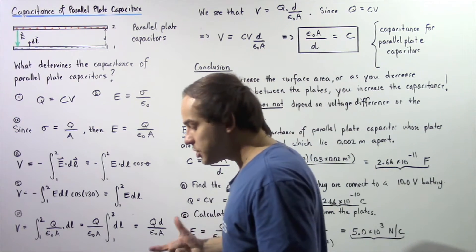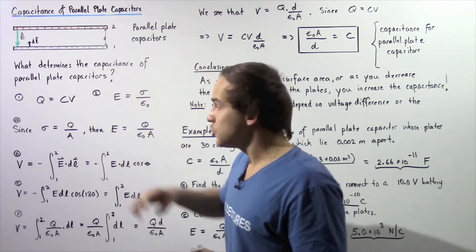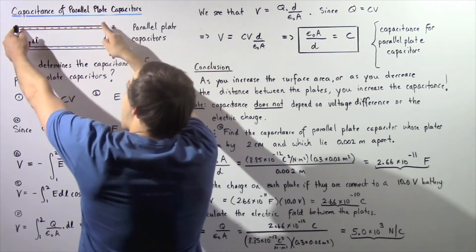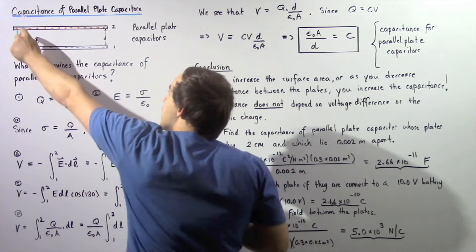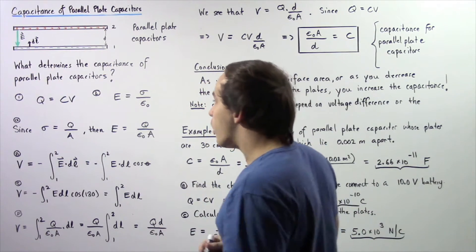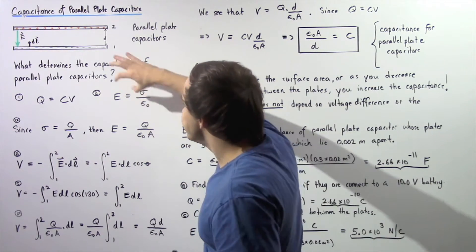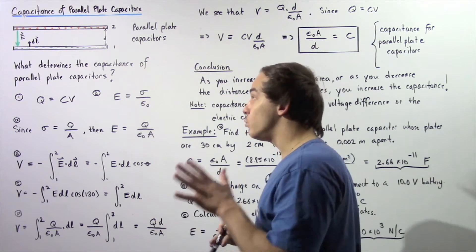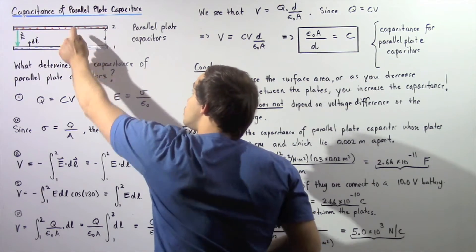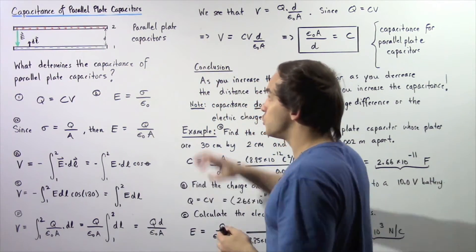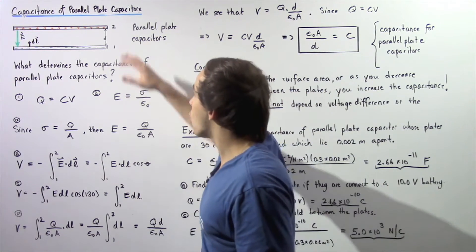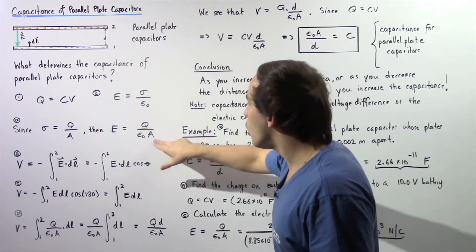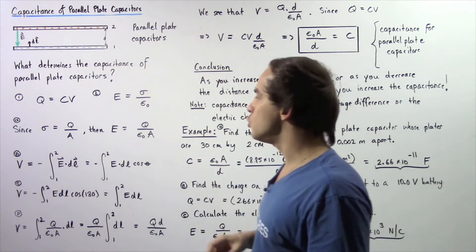By definition of charge density, sigma equals Q divided by A, where Q is the quantity of charge on a parallel plate and A is its surface area. Substituting Q/A for sigma into our electric field equation, we see that the electric field between the two parallel plate capacitors equals Q divided by epsilon naught multiplied by the surface area A of either one of the plates.